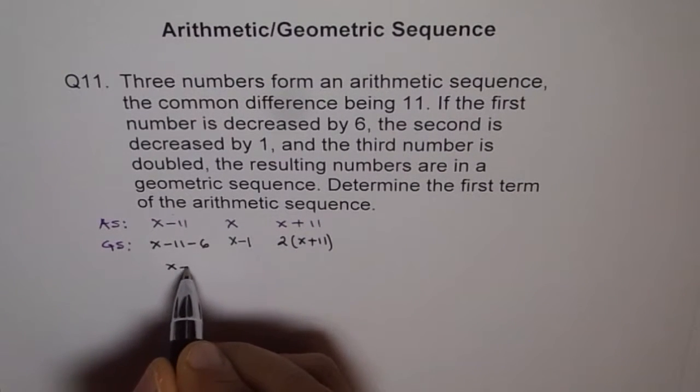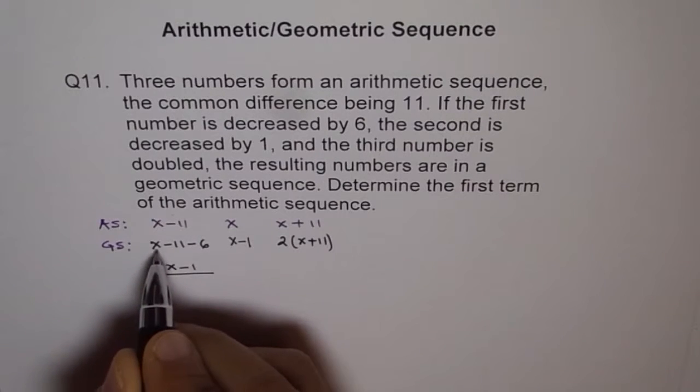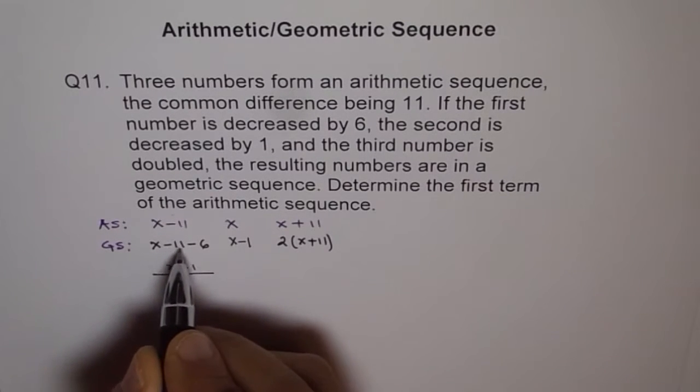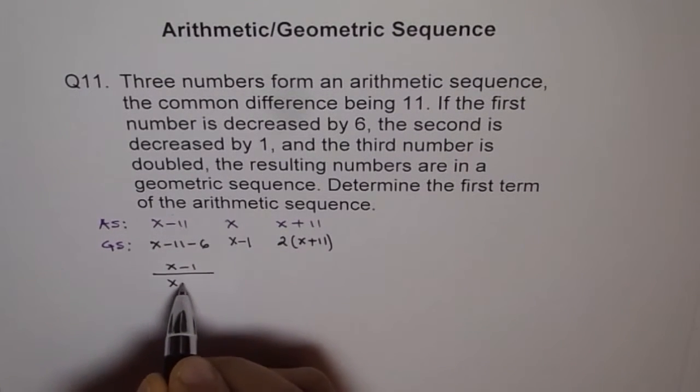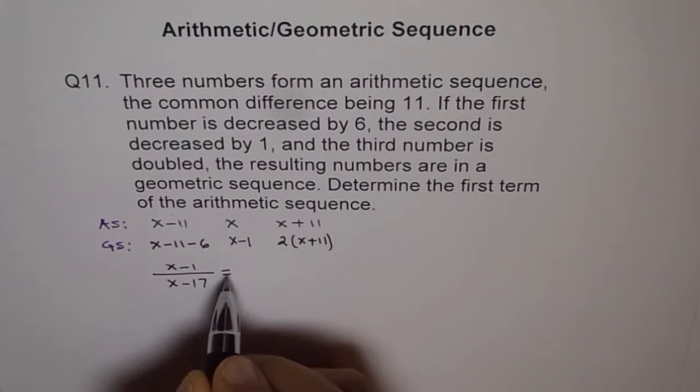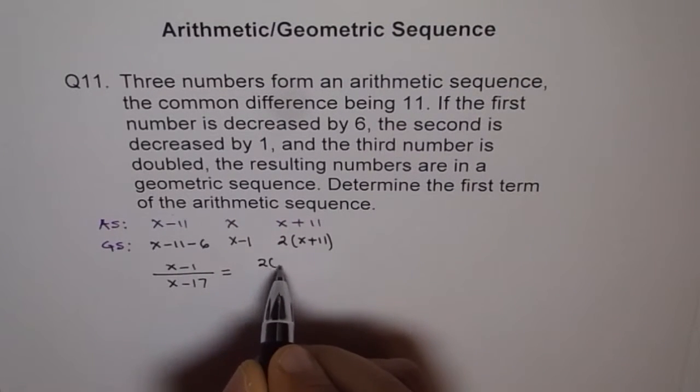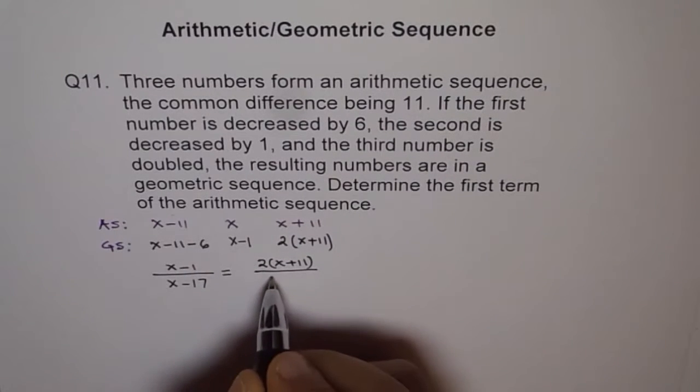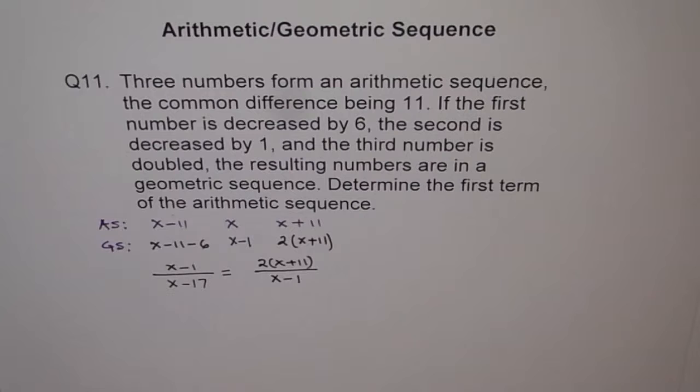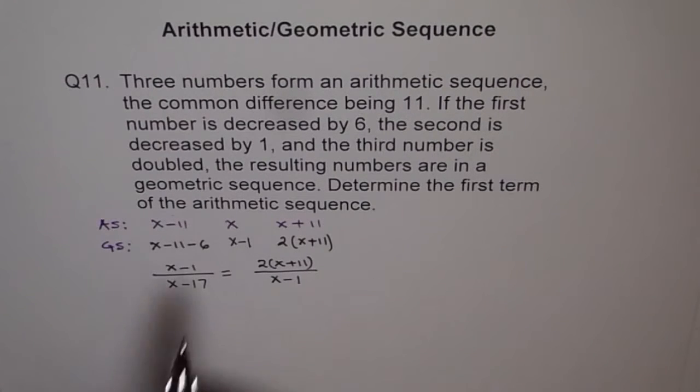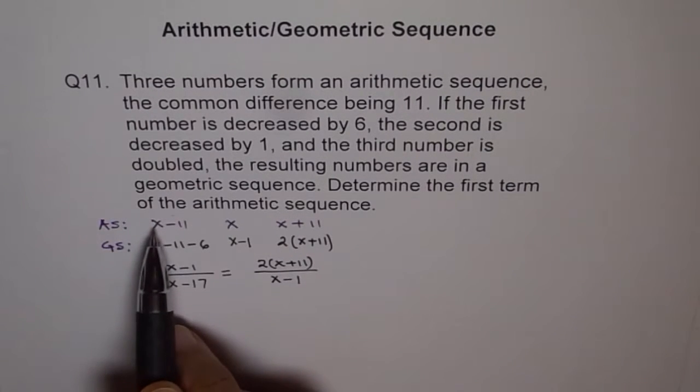See, x minus 1 divided by x minus 11 minus 6 will give us x minus 17, right? Should be equal to this term, which is 2 times x plus 11, divided by x minus 1. So that is what it gives us. Now here we have only one variable and we can always solve for it, x, right? Remember, x is not our initial term. x is 11 more than the first term.